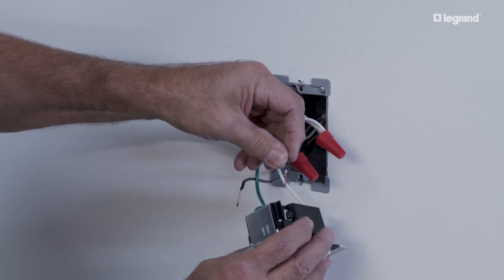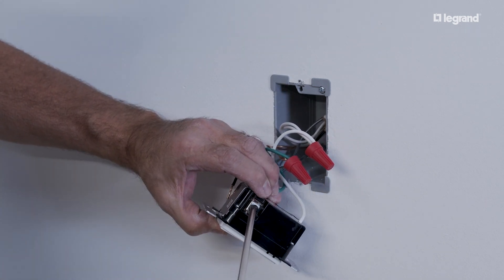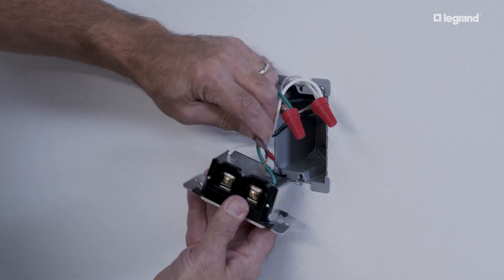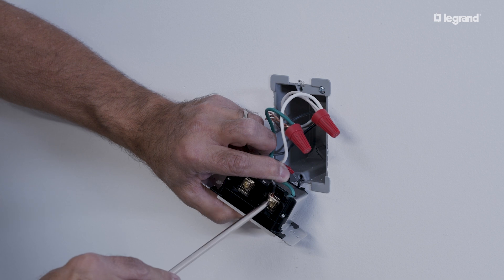For the remaining hot and load wires, connect them to the corresponding screw terminals by inserting them underneath the terminal plate and screwing it back down. The screws are labeled on the back of the device as either hot, traveler load, or traveler.